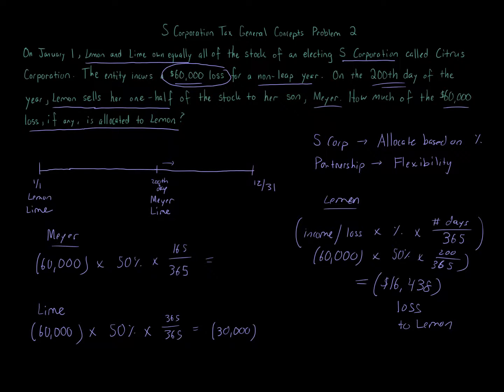For Meyer it would be $60,000 loss times, my apologies, times 10% times 165 over 365, and you get the amount for Meyer for the year. Lime would be the same. That's all you do and it's really simple.